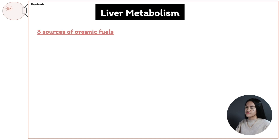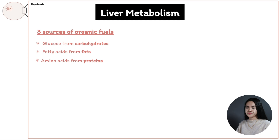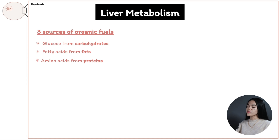We have three sources of organic fuels: glucose from carbohydrates, fatty acids from fats, and amino acids from proteins. Hepatocytes — the liver — are responsible for breaking down these complex macromolecules into simple end products in order to release energy. After we consume these nutrients, sugars, amino acids, and triacylglycerols are absorbed by the epithelial cells of the intestine, then into the capillaries, into the blood, and to the liver. The role of the hepatocyte is to break down these nutrients so we can extract energy and precursors that other tissues need.